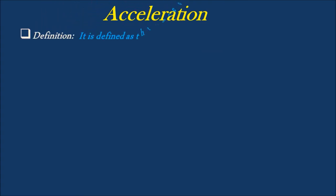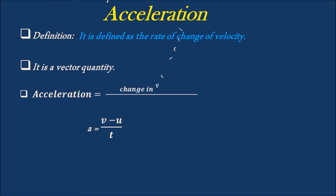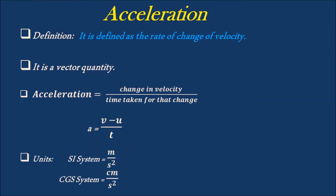Acceleration is defined as the rate of change of velocity, or change in velocity divided by time taken for the change. Acceleration is a vector quantity because it has both magnitude and direction. Acceleration is expressed as change in velocity divided by time taken for the change; in simple, A is equal to V minus U divided by T. In SI system, acceleration is expressed as meter per second square, whereas in CGS system it is expressed as centimeter per second square.